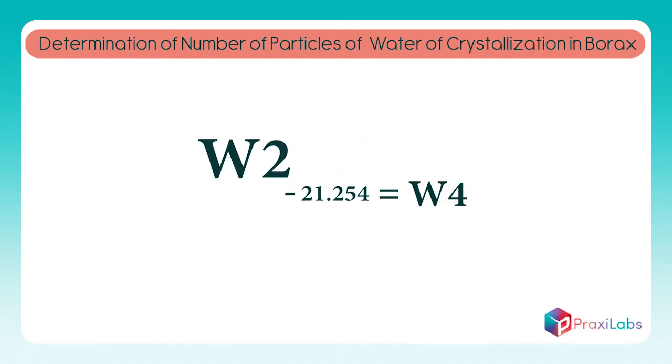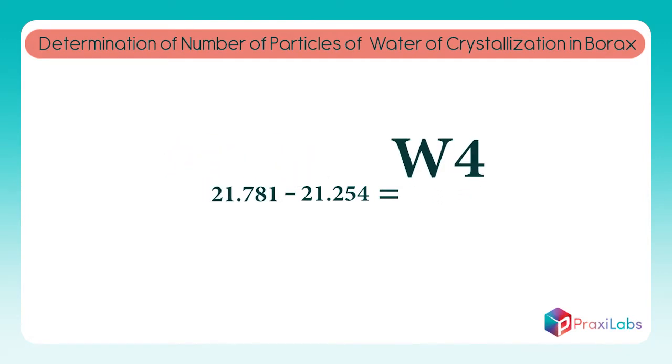The weight of the crucible when it contains the borax after placing it in the drying oven takes sign W2 and equals 21.781 grams. The weight of the anhydrous borax takes sign W4 and equals 0.527 gram.